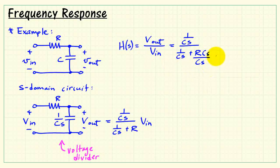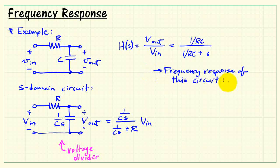Let me do a little bit of algebraic reshuffling here. Looks like CS can divide out. I want to get a unity coefficient on S, so let's multiply top and bottom by 1 over RC.